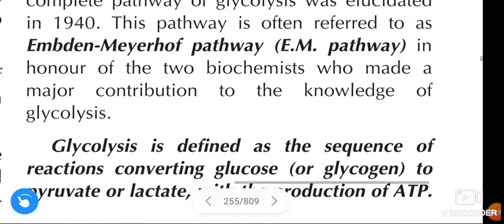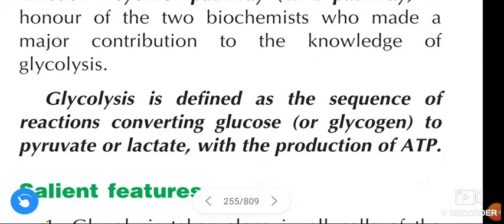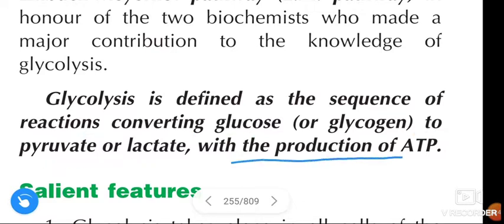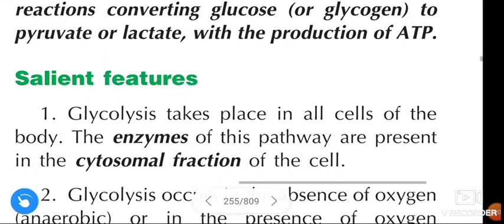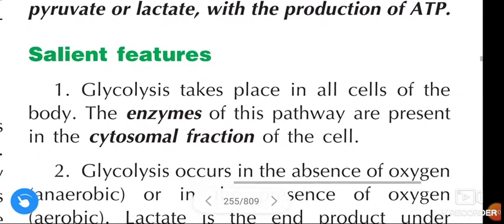Glycolysis definition: Glycolysis is defined as a sequence of reactions converting glucose or glycogen to pyruvate or lactate with the production of ATP. Next, salient features of glycolysis: first, glycolysis takes place in all cells of the body.